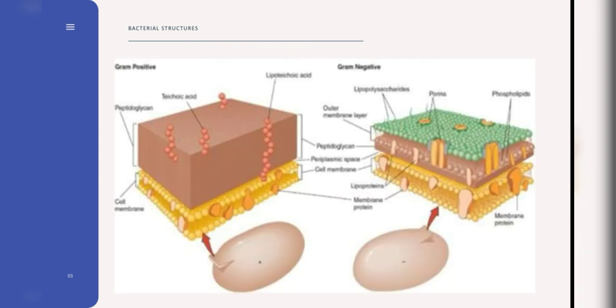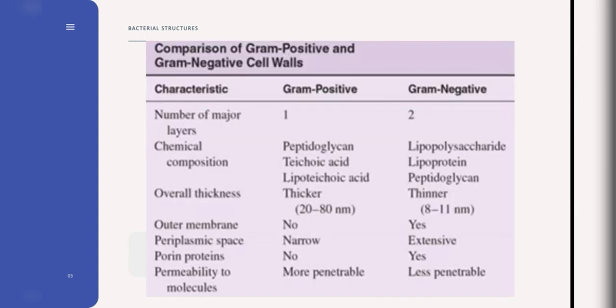Gram-positive bacteria have lots of peptidoglycan in their cell wall which allows them to retain crystal violet dye so they stain purple to blue. And gram-negative bacteria, on the other hand, have less peptidoglycan in their cell wall so cannot retain the crystal violet dye which is the primary stain. So, this stains red to pink. And this table shows the comparison of gram-positive and gram-negative cell walls.